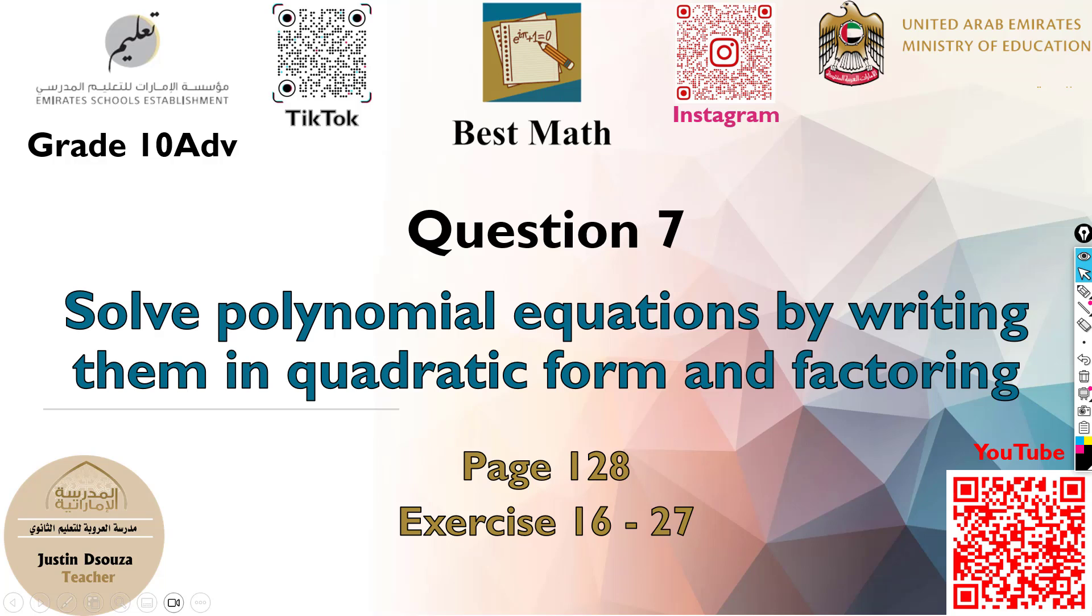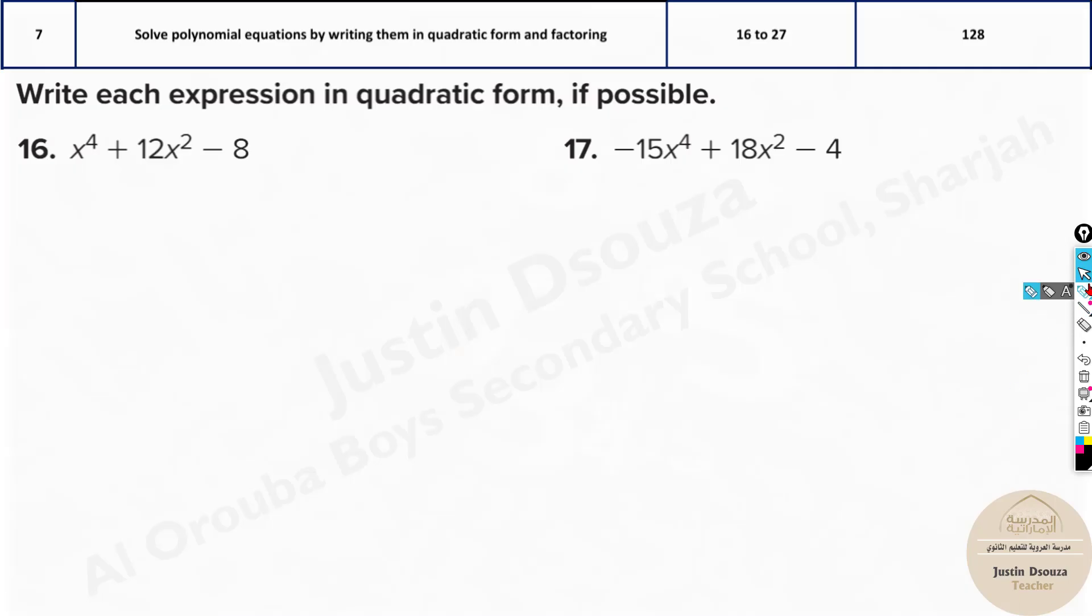Question 7 is to solve polynomial equations by writing them in quadratic form and then factoring. Here you can see equations generally with powers more than 3. There might be power 3 as well, but generally more than that. What you need to do is write them in quadratic form. What is the quadratic form? It's ax² + bx + c = 0.